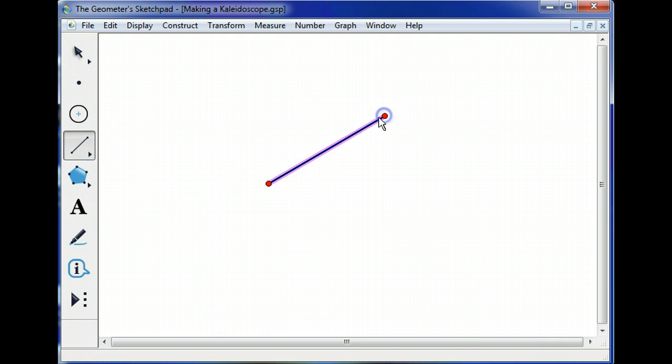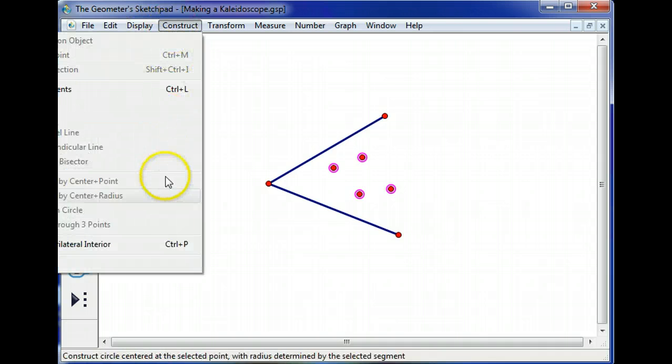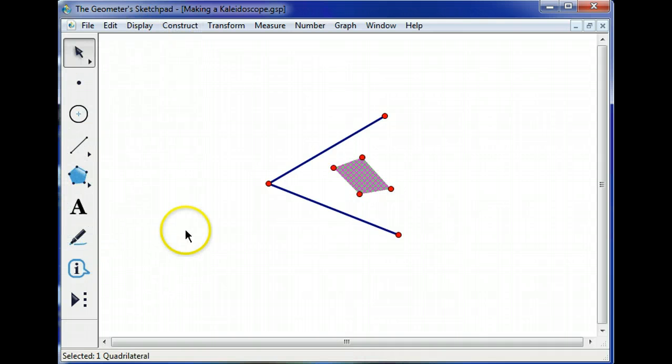To begin, we're going to create an angle with two segments, and inside that segment I'm going to put in a polygon. I'm just going to put in a quadrilateral, and to create our quadrilateral I'm going to select these points in clockwise order, go to Construct, Quadrilateral Interior.